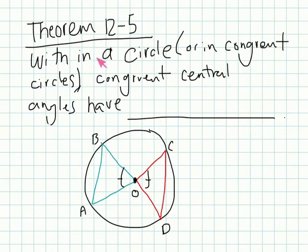Theorem 12.5. This says within a circle, congruent central angles have congruent chords. So not only do they have congruent arcs, which we looked at last time, arc AB would be the same as arc CD, but the lengths of their chords—chord AB and chord CD will also be the equal length. So again, if you have congruent central angles, both their arcs and their chords will be the same. Let's move on.